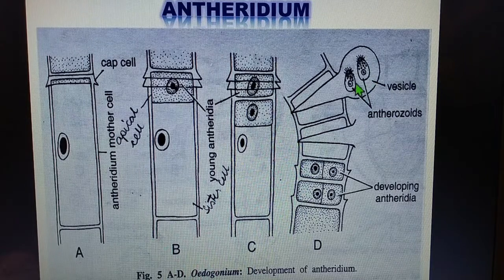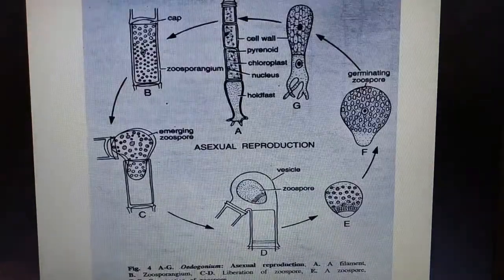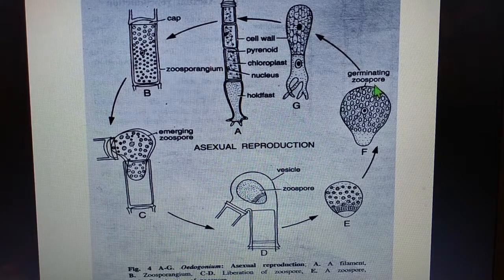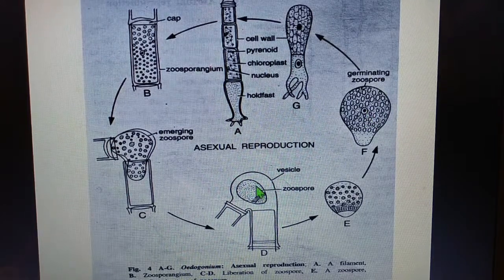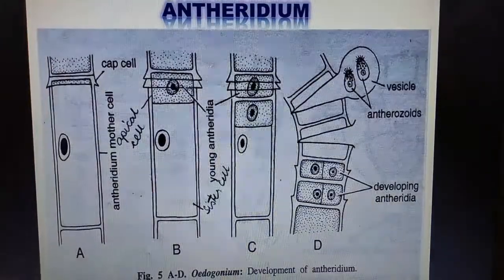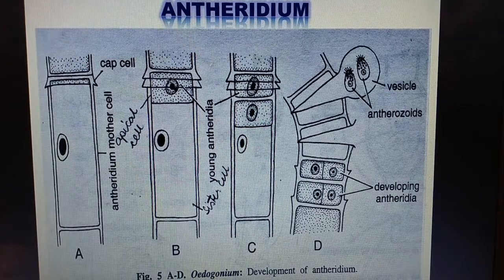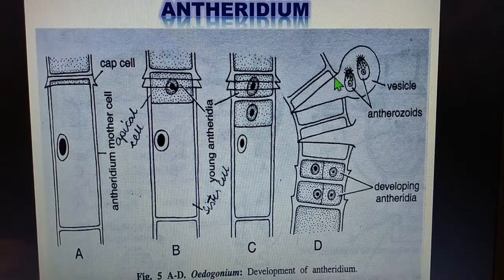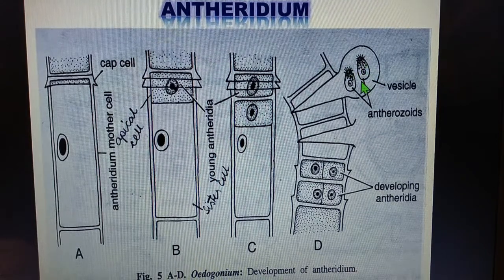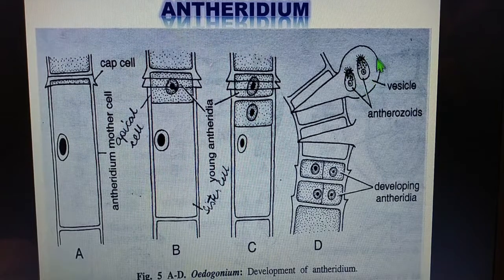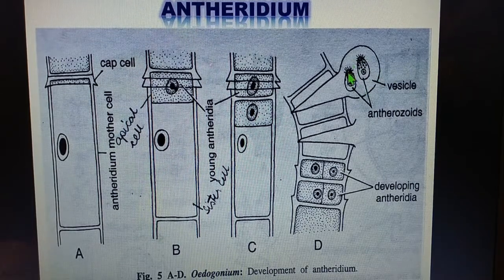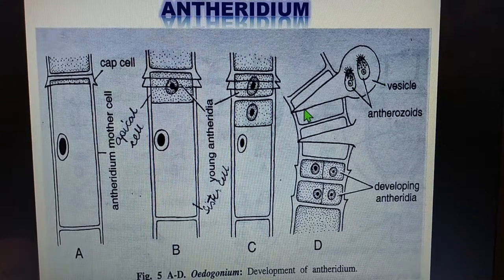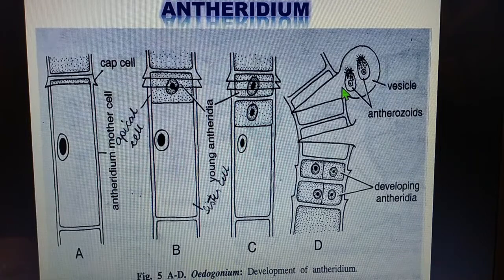The antherozoids are similar to the zoospores from asexual reproduction — both are multiflagellate, have a single nucleus, and are unicellular. The antherozoid is smaller in size, has fewer flagella, and is yellowish in color due to its reduced plastids.